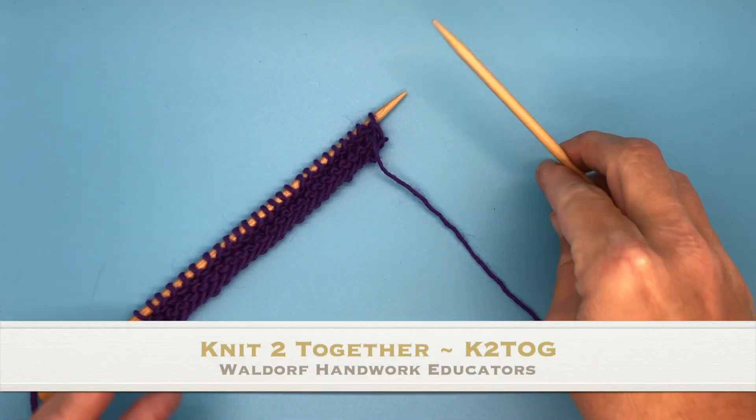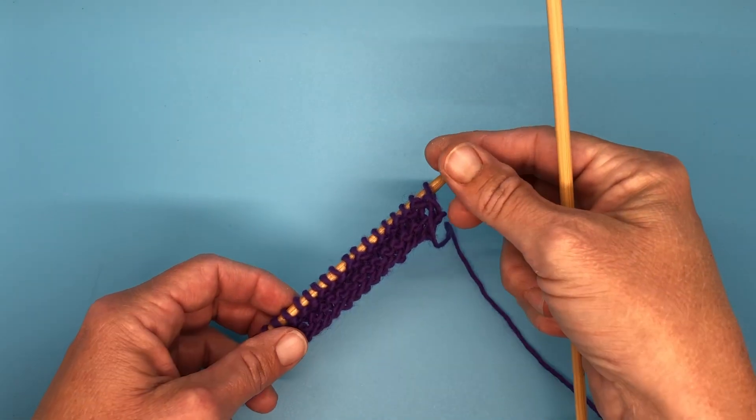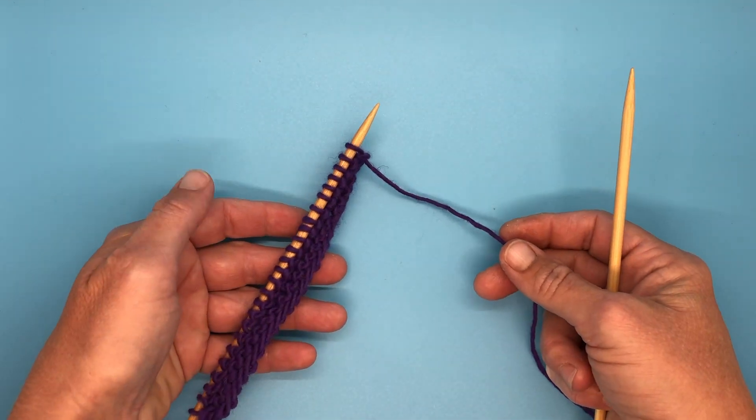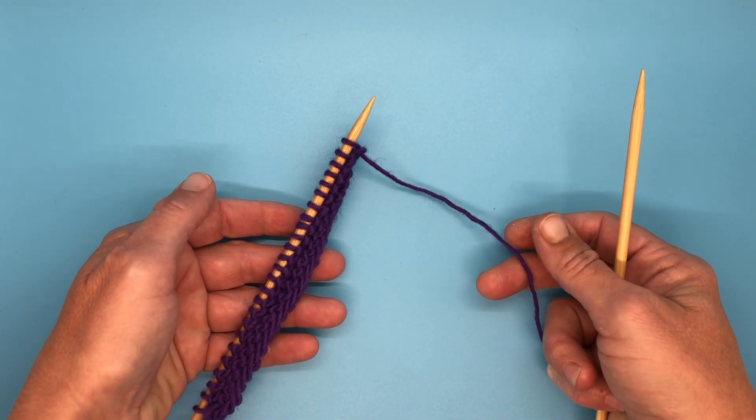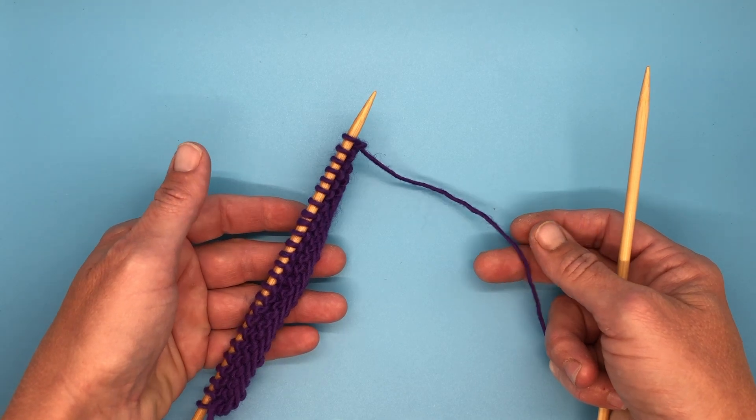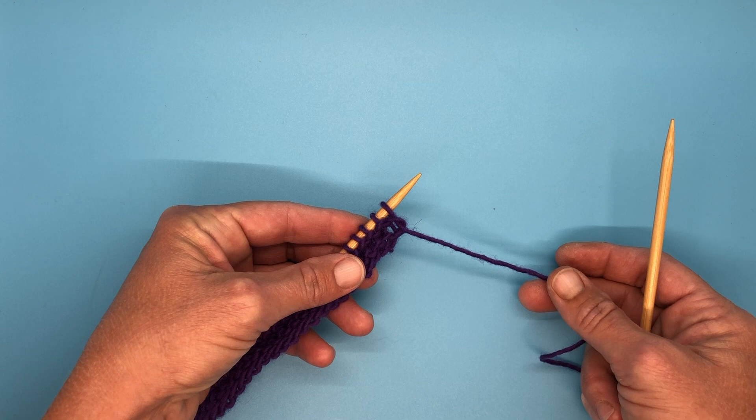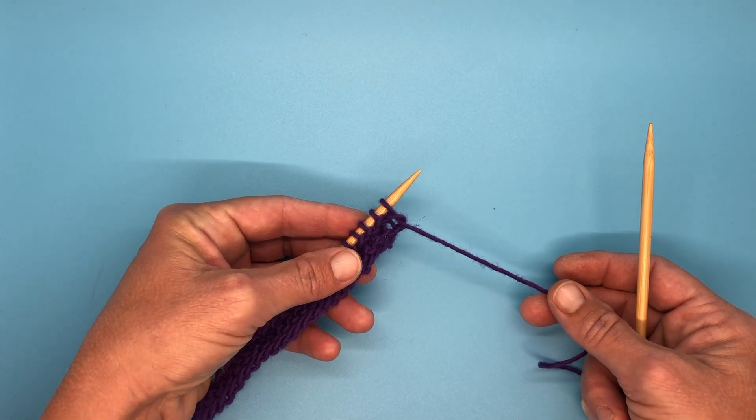In this video I'll show you how to knit two together. This is a technique that is often used in knitting patterns to decrease your knitting. So the first two stitches on my needle here, I'm going to knit two together.